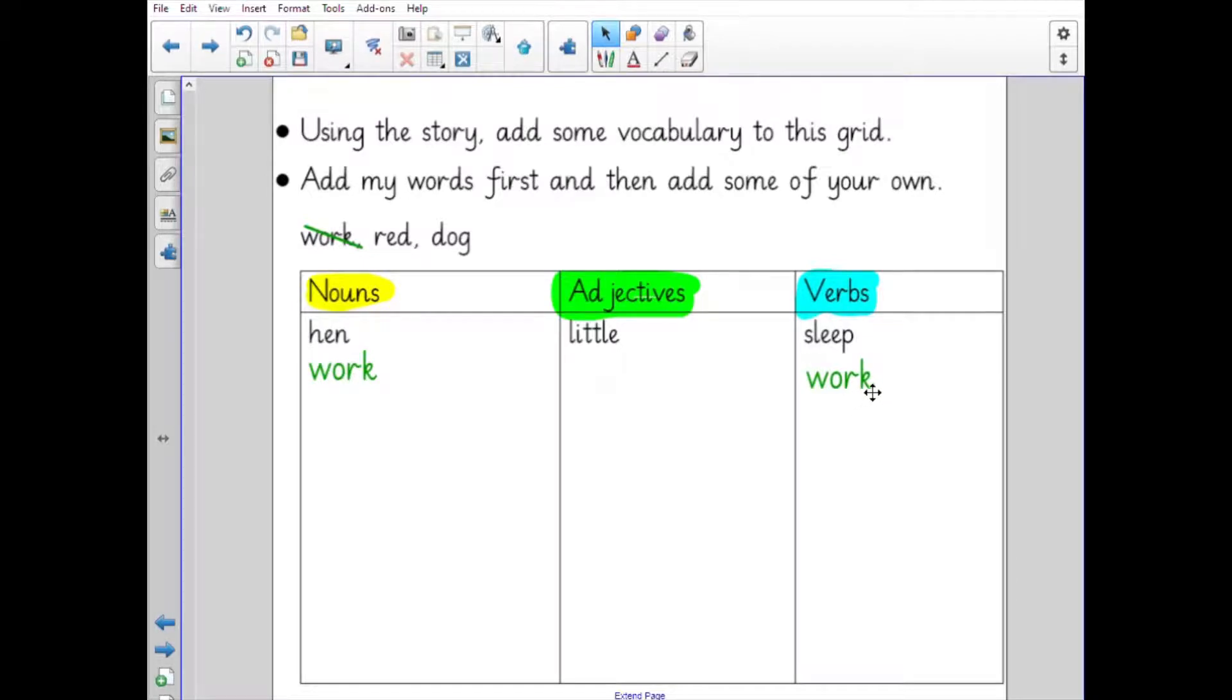Red - where would red go? Red is an adjective. It describes things. You could have a red hen, for example. And finally...